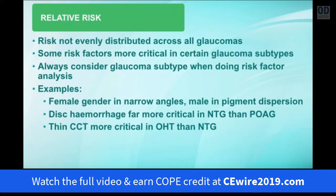Relative risk is not always evenly distributed across all glaucoma subtypes. Some risk factors are more critical in normal tension glaucoma and have very little relevance to primary open angle glaucoma. For example, females are more represented in narrow angle glaucoma, males more so in pigment glaucoma. Disc hemorrhages are more critical in normal tension glaucoma and don't seem to make much difference in primary open angle disease. As the OATS study showed, a very thin central corneal thickness is more critical in conversion from ocular hypertension to glaucoma than in patients with low pressures, such as normal tension glaucoma. Always consider the type of glaucoma when doing your risk factor analysis.